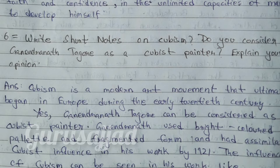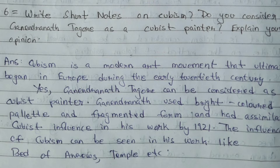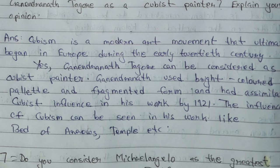Question number 6: Write short notes on cubism. Do you consider Gaganendranath Tagore as a cubist painter? Explain your opinion. Answer: Cubism is a modern art movement that began in Europe during the early 20th century. Yes, Gaganendranath Tagore can be considered a cubist painter. He used a bright-coloured palette and fragmented forms, and had assimilated cubist influence in his work by 1921. The influence of cubism can be seen in works like Bed of Arrows, Temple, etc.